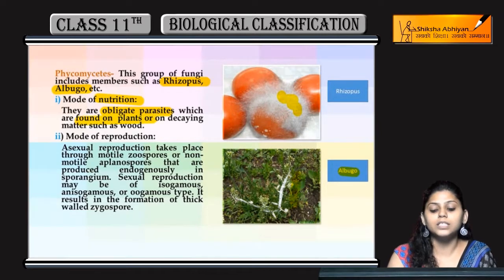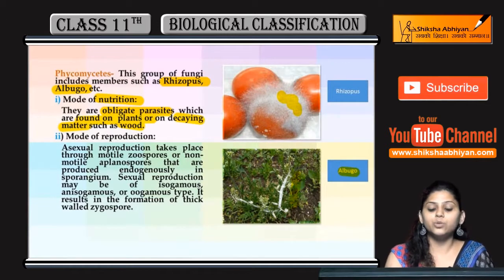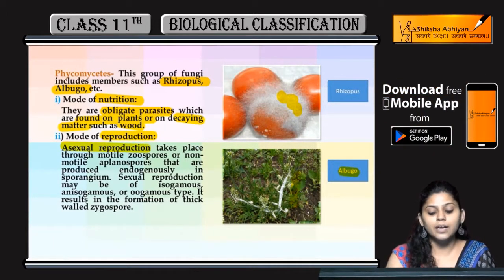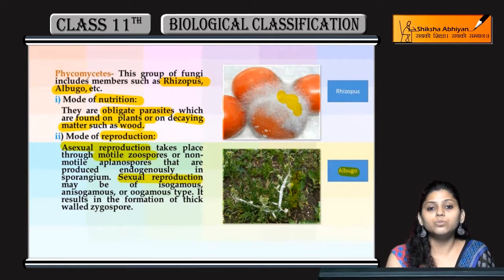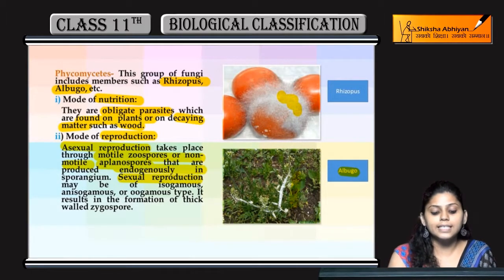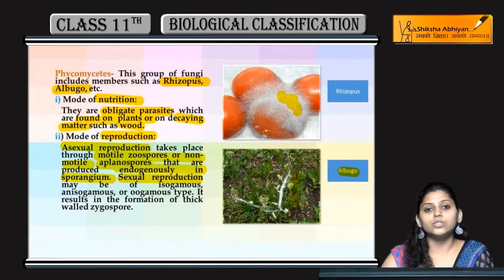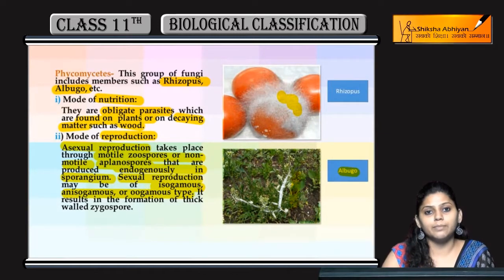They are found on plants or on decaying matter jaise ki wood. In ka mode of reproduction asexual bhi ho sakti hai aur sexual bhi. Asexual reproduction mein motile spores hote hain aur non-motile aplanospores jo produce hote hain endogenously in sporangium. Sexual reproduction isogamously, anisogamously, aur oogamous type ki hoti hai.